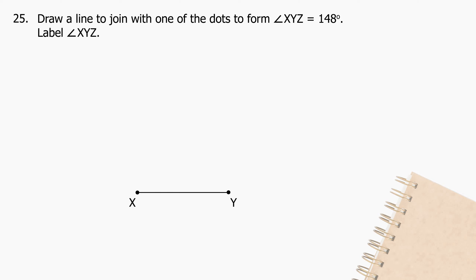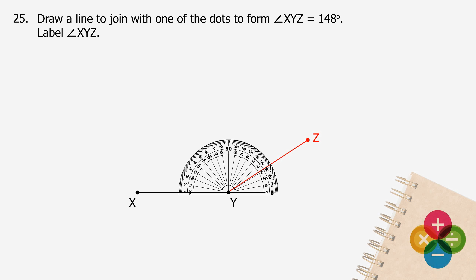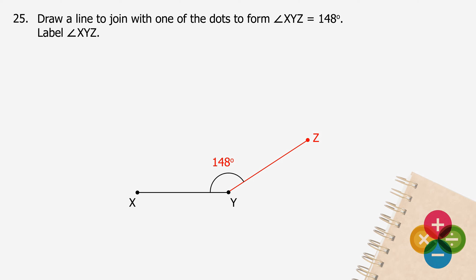Question 25: Draw a line to join with one of the dots to form angle XYZ equal to 148 degrees. Label angle XYZ. Using the protractor, measure 148 degrees. Draw a line from point Y and extend to point Z. The angle XYZ will be shown as above.